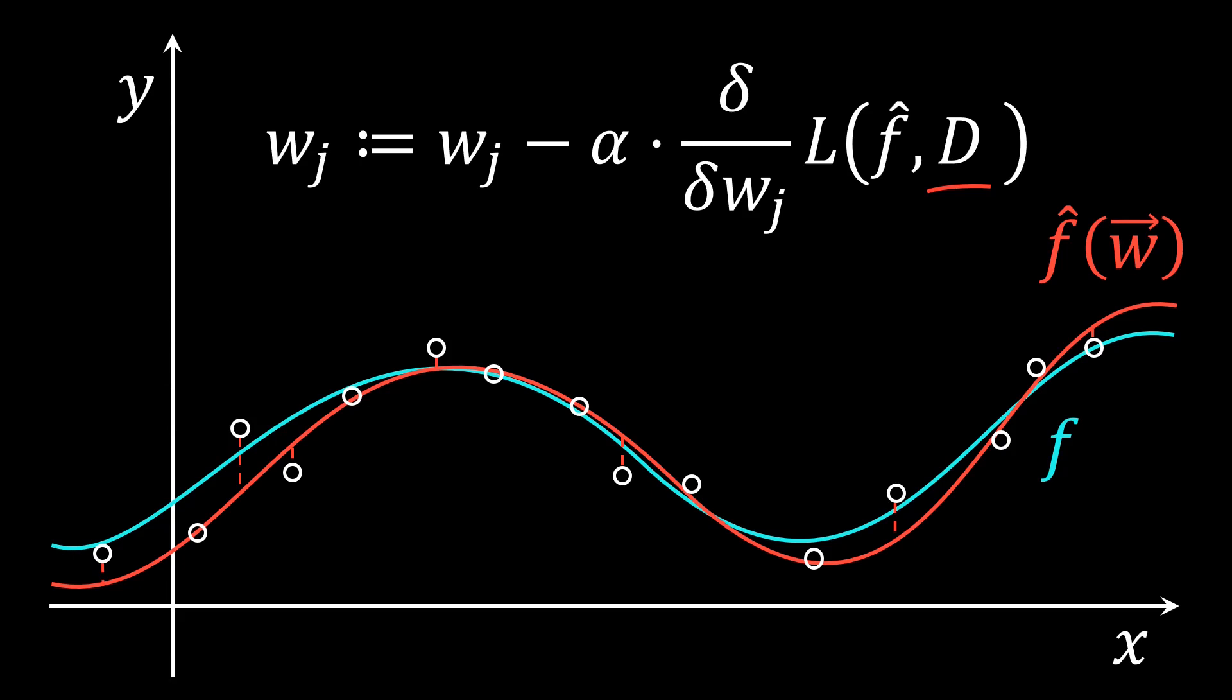To resolve this we can split the dataset into subsets of equal size and use these subsets of data to estimate the gradient. Such subsets are also referred to as minibatches. Since we split the data randomly, this approach is called stochastic gradient descent or SGD in short.